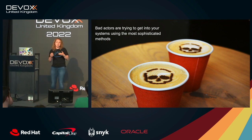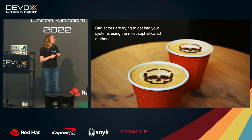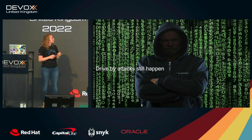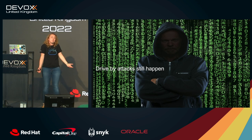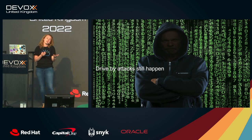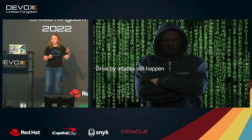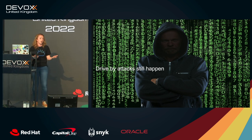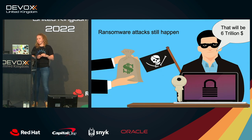Bad actors are still trying to get into our systems using ever more sophisticated methods. We've got things like drive-by attacks, where you've happened to leave a back door open somewhere — they weren't targeting you specifically, they just found an opening and got through. These still happen regularly, and it's basically where they're taking advantage of vulnerabilities within your system.